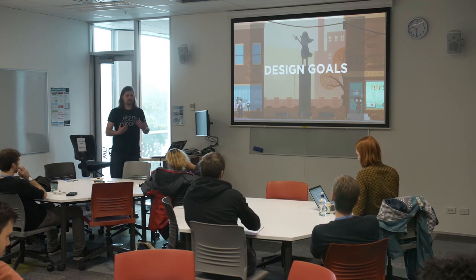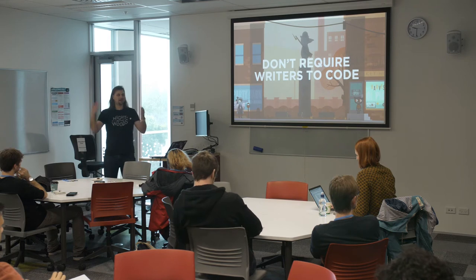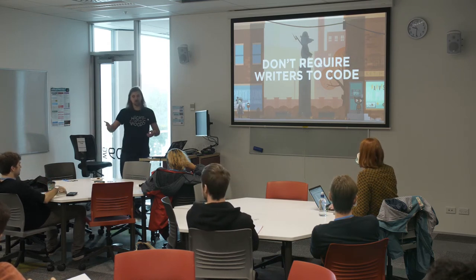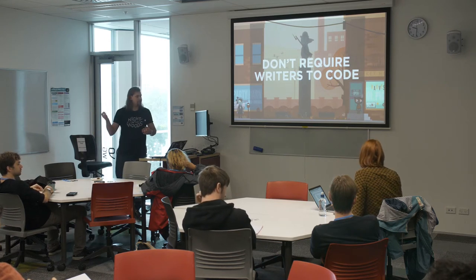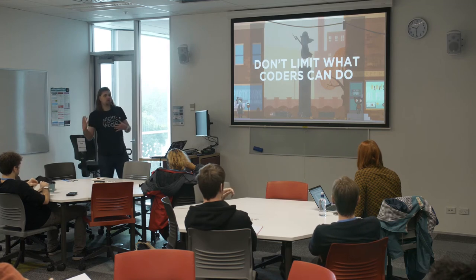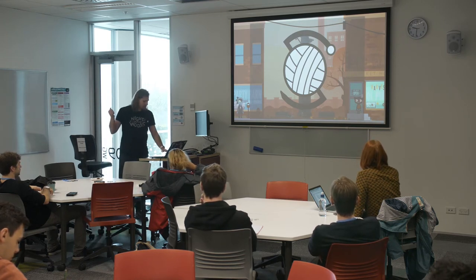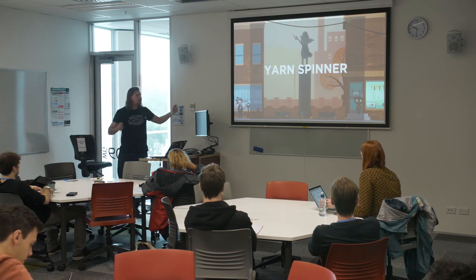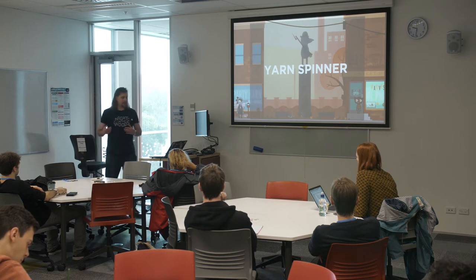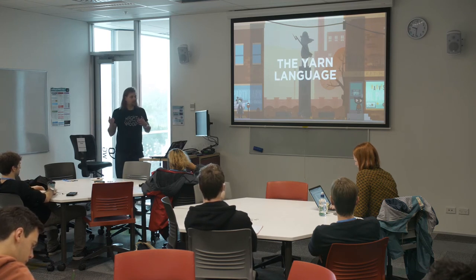The two main design goals for Yarn Spinner — which we think are fairly generalizable to most narrative games — are: first, we don't require writers to learn how to code; and second, the system also needs to be useful for a programmer constructing the logic of scenes. Yarn Spinner is a dialogue system that works by reading Yarn scripts, sends lines of dialogue to your game for display, and is also a full programming language useful for scripting entire gameplay.